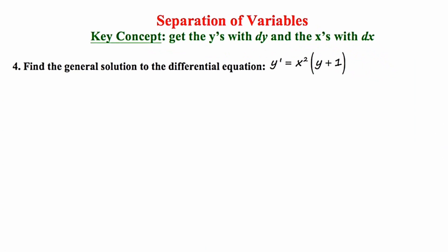Now we're on the fourth slide and we're taking a look at example number four: find the general solution to the differential equation y prime is equal to x squared times y plus one. Let's remind ourselves of our key concept: get the y's with dy and the x's with dx. Interestingly, we don't even have a dy or a dx, because this problem is presented with y prime notation. So let's start by rewriting the initial problem using dy/dx instead of y prime.